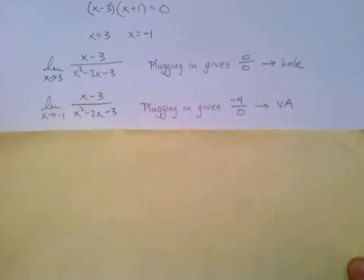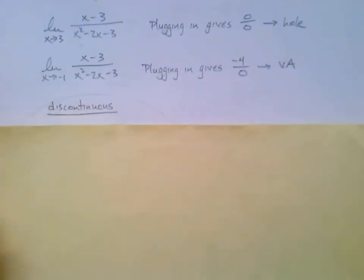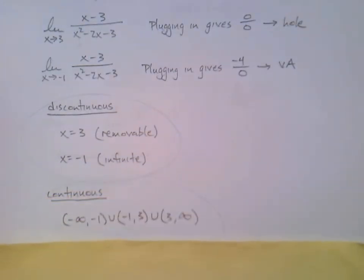So I can say that without actually seeing the graph, it's discontinuous at three - it was removable, and at x equals negative one, it was infinite. And so then if I wanted to state where this function is continuous, well it's just everywhere else. This would be continuous from negative infinity up to that first value, negative one, then from negative one to three, and union three to infinity.